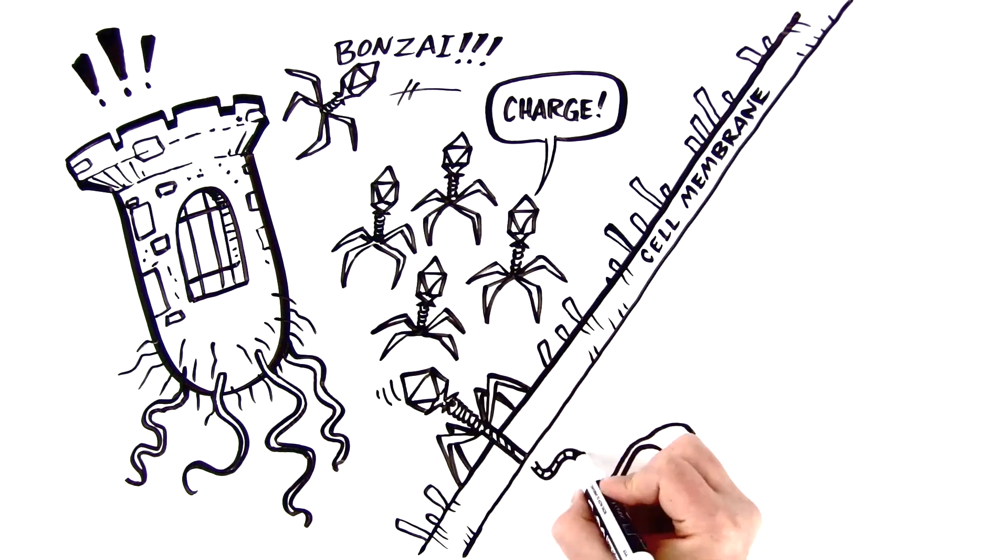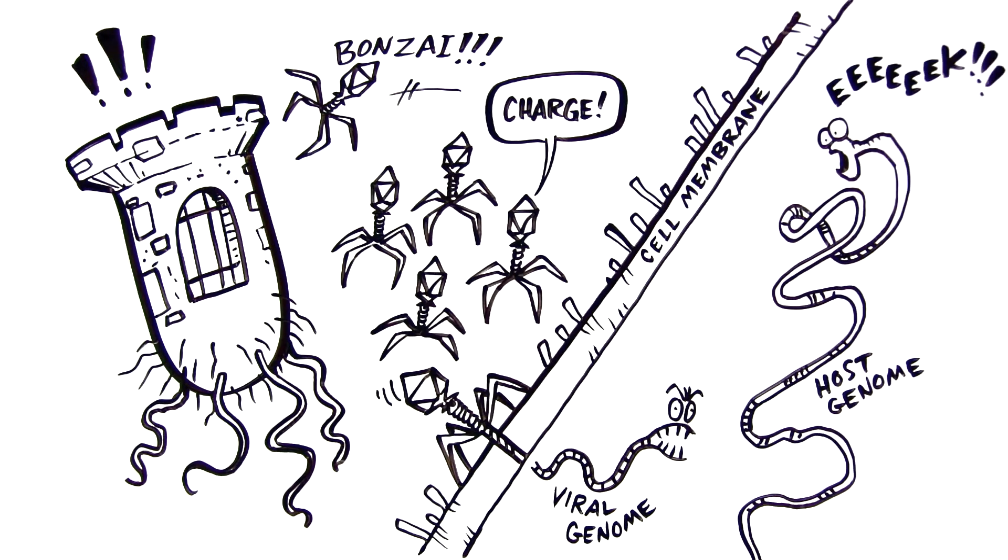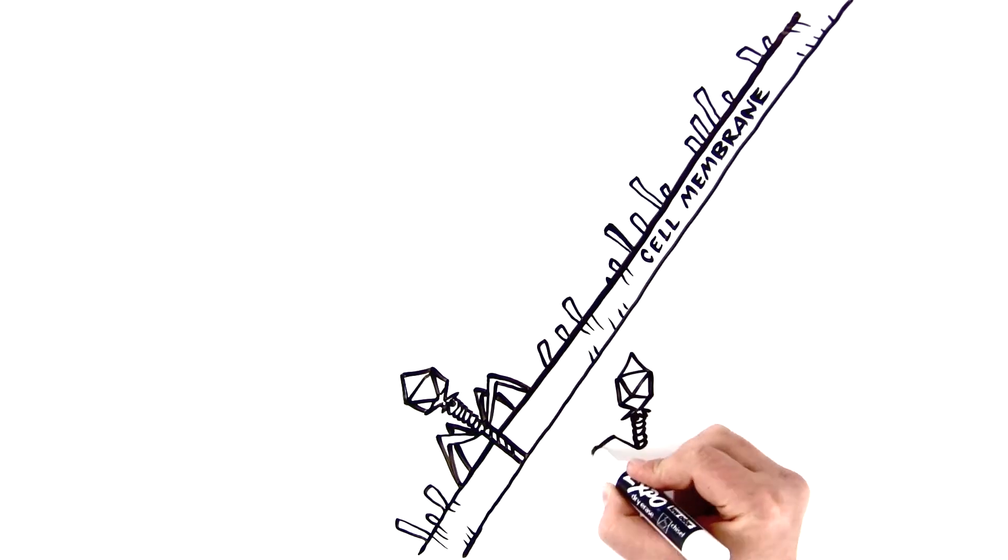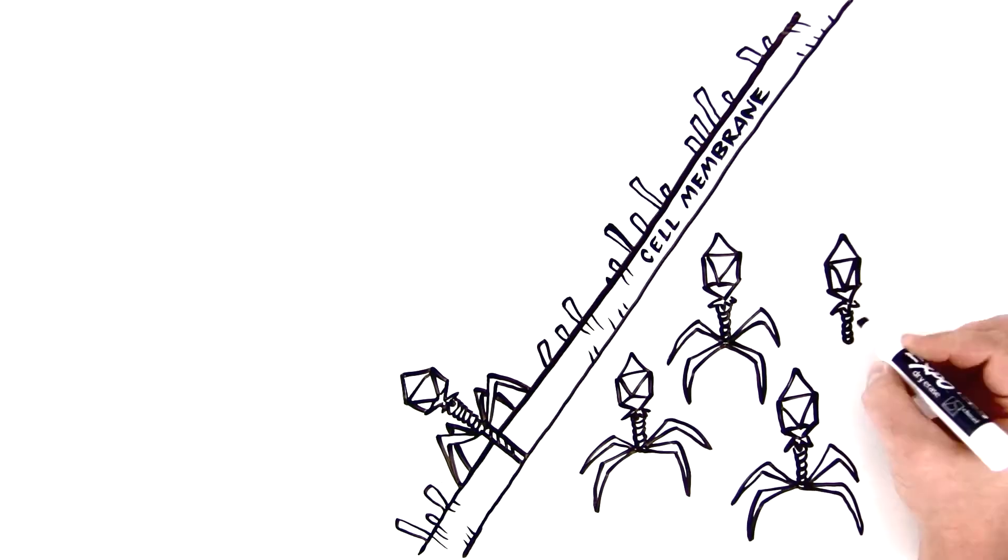The problem is bacteria aren't equipped with a complex immune system like we are. They have no royal army, so to speak. And it's not hard for an infiltrating virus to replicate, pillaging the castle and rendering everything inside inoperable.